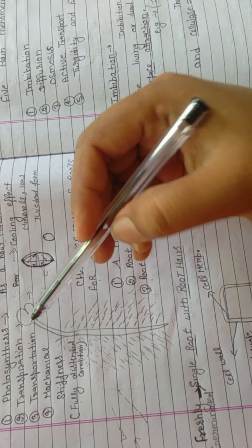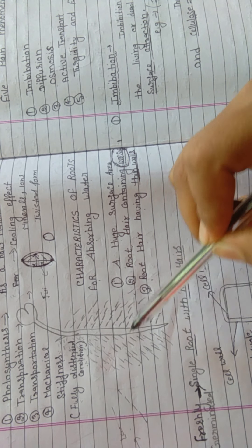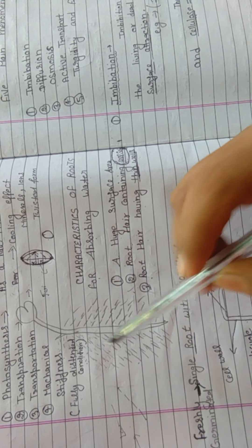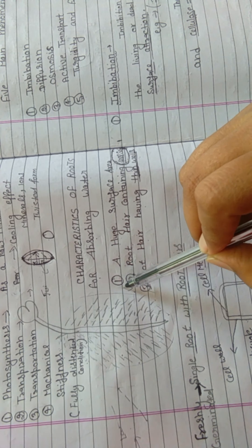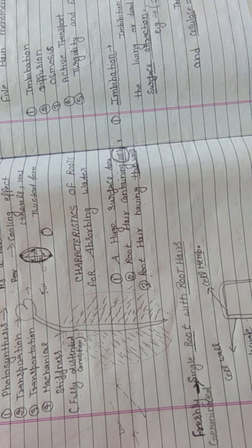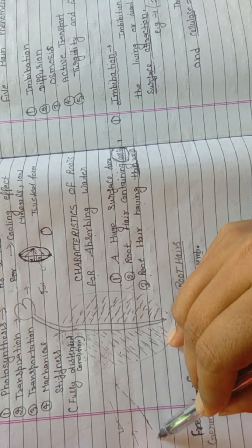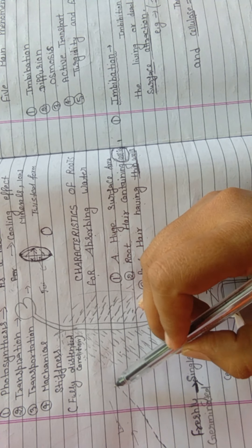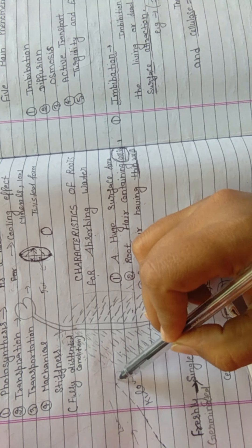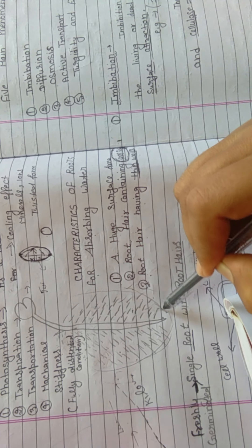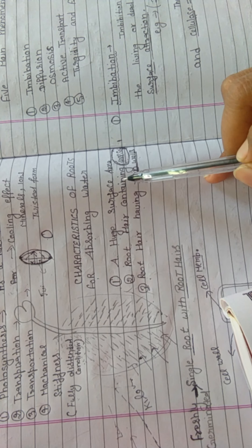Next, characteristics of roots for absorbing water. First is a huge surface area. This means if all the root hairs of this plant — a single root with many root hairs, freshly germinated — were laid end to end, they would cover a length of many kilometers. The greater the surface area, the greater the capacity to absorb water.